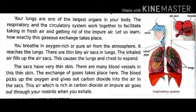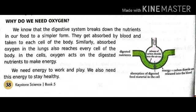जब हम सांस छोड़ते हैं तो हम अपने नौथुने से बाहर इस हवा को निकाल देते हैं। Next: why do we need oxygen? We know that the digestive system breaks down the nutrients in our food to a simpler form. They get absorbed by blood and taken to each cell of the body. Similarly, absorbed oxygen in the lungs also reaches every cell of the body.